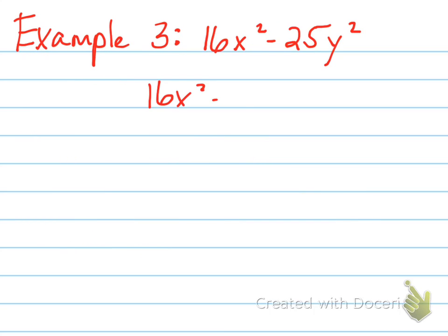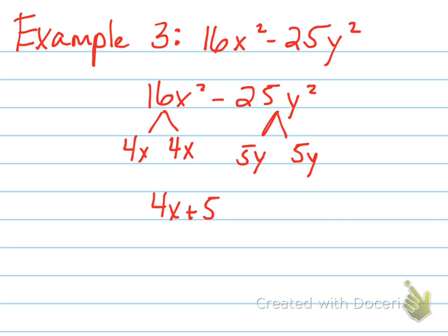Let's look at an example where we can factor out both of them here. 16x squared is 4x times 4x, and 25y squared is 5y times 5y. So when I write it, it still follows suit. 4x plus 5y, 4x minus 5y. So your difference of squares can be either one.